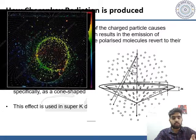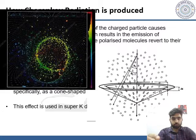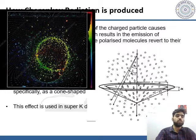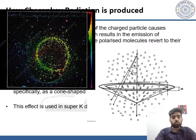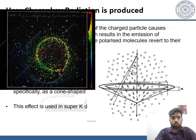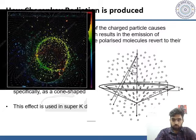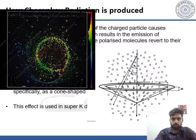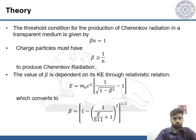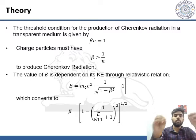Here you can see a photo from the Super Kamiokande detector showing the Cherenkov radiation ring. It is used because muons and neutrinos have a very small lifetime. This ring is used to detect neutrinos and muons. The medium used in this detector is water.